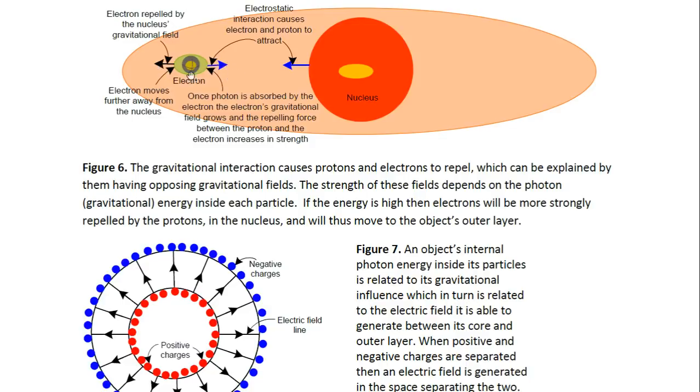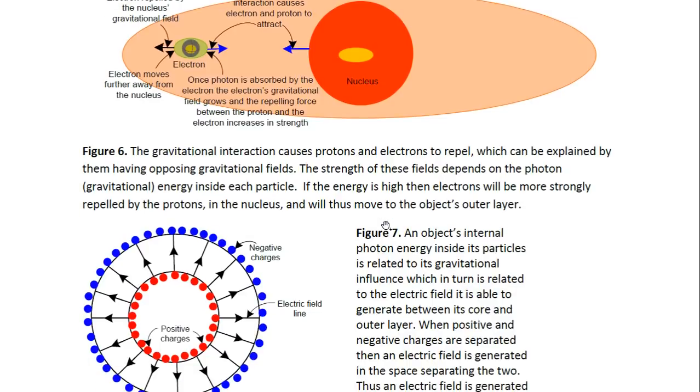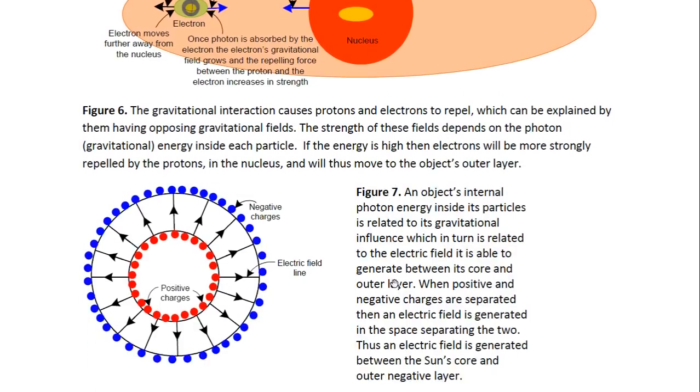It's balanced by the two forces. The electrostatic pulls it towards the nucleus, and the gravitational, which is a repelling force, pushes it out of the nucleus. So it stays within a certain region, a certain distance from the nucleus. But when there is enough energy in the particles of a celestial object, then all the protons and the electrons will have a stronger repelling force between them.